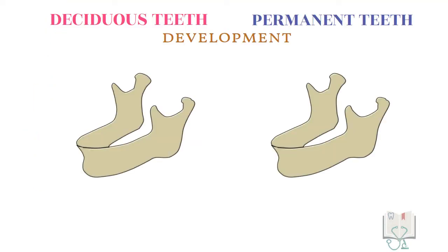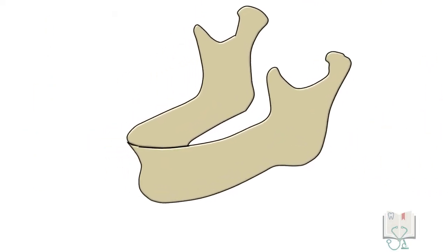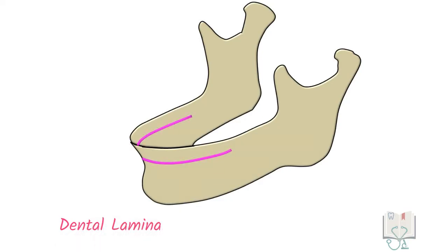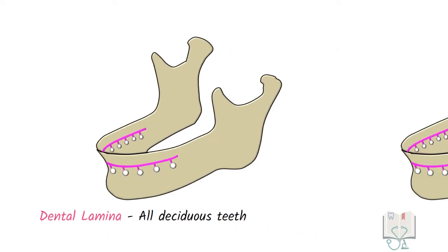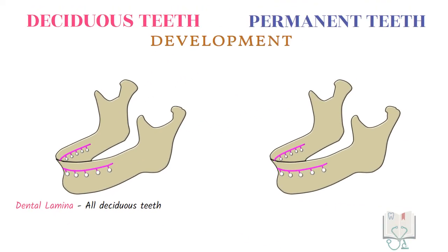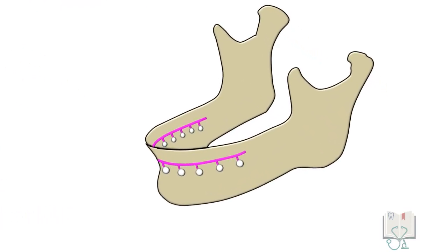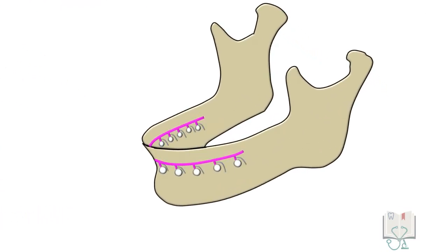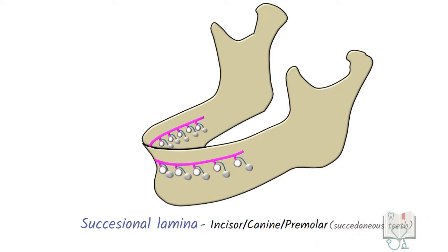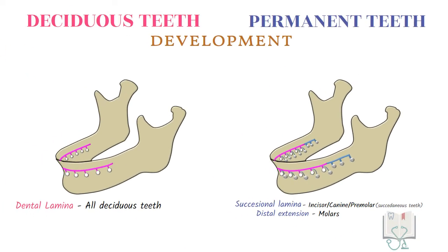If we see their development, in deciduous dentition it is the dental lamina from which all deciduous teeth develop, whereas in permanent dentition, from the dental lamina develops a lingual extension called the successional lamina, from which the incisors, canines, and premolars develop. Moreover, from the distal extension of the dental lamina, all the permanent molars develop.